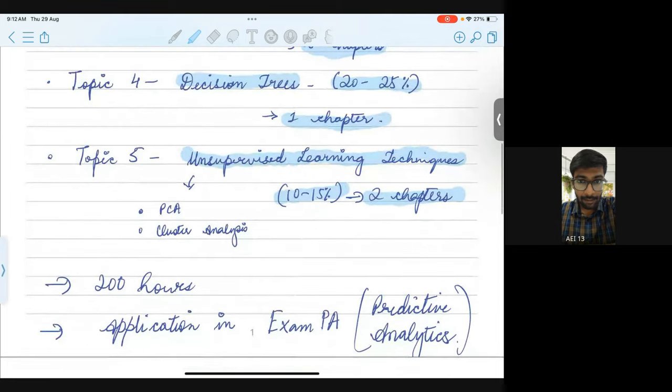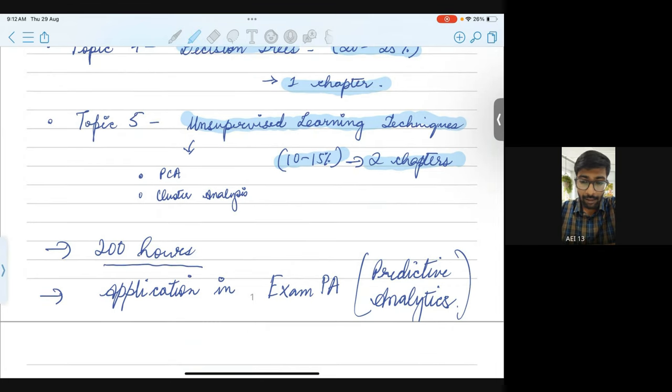Note that this entire subject is only theoretical. MCQs are like more application-based, I would say. It consists of a lot of conceptual questions. Each question will have 5 options, so you have to select one of them. In terms of the number of hours, you can think of this exam requiring around 200 hours. And as I mentioned, it's mostly theoretical. There is no practical part of it as you would find in CS1 or CS2 from IFOA or IEI.